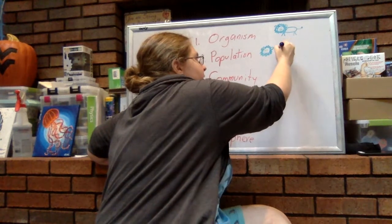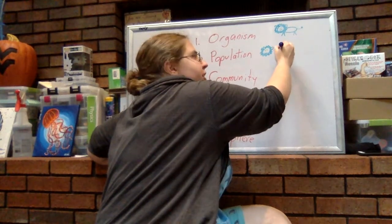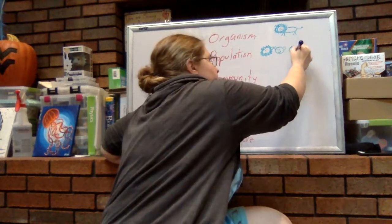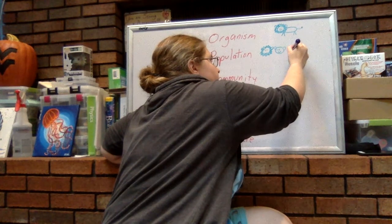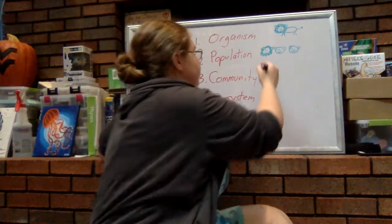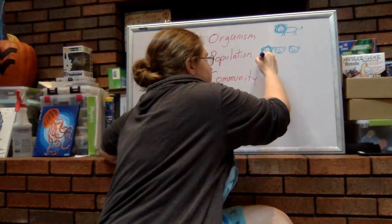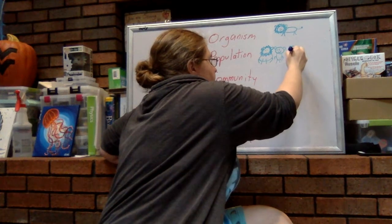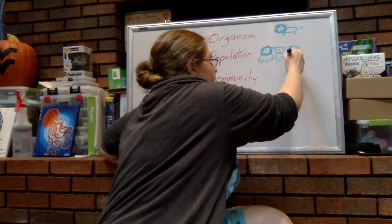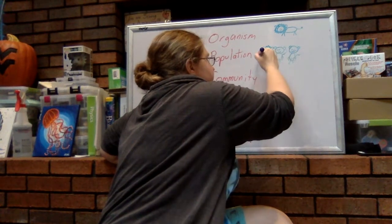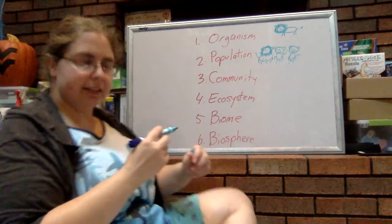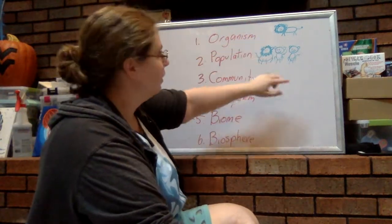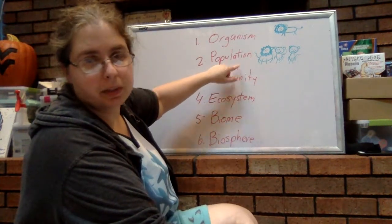Now a pride of lions living together in one area, that would be a population. So all of the lions in the pride make up our population. So one lion is an organism. All of the lions together would be the population.